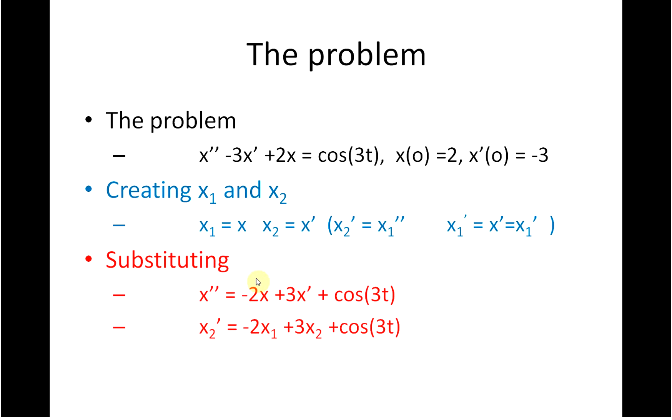For x, we put in x1. For 3x dash 3dt dx, we put in 3x2 because that's there. And the cos 3t remains the same.